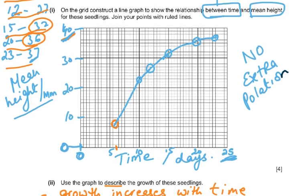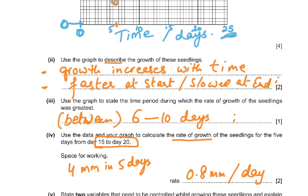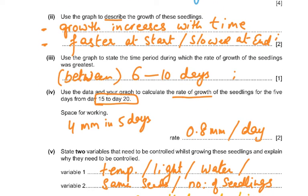Use the graph to describe the growth of these seedlings. Growth increases with time, faster in the beginning and slower at the end. That was the two marks. Use the graph to state the time period during which the rate of growth of the seedling was greatest: between six and ten days. That's when you can see the sharp increase, the gradient. Use the data and your graph to calculate the rate of growth. Rate of growth is always something over time. Rate of growth for the five days from day 15 - so four millimeter in five days.